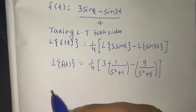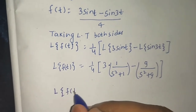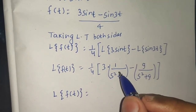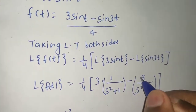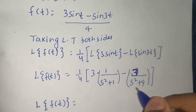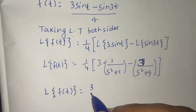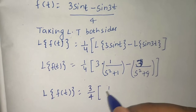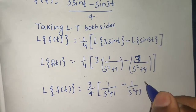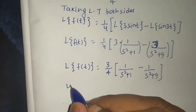Simplifying, Laplace of f(t) = (3/4) · [1/(s² + 1) − 1/(s² + 9)].